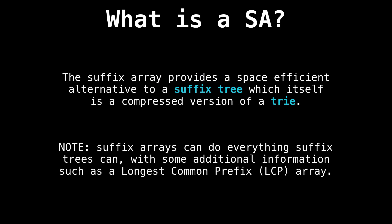In summary, a suffix array is an array of indices which store the sorted suffixes of a string. For a bit of history, the suffix array is a data structure originally designed to be a space-efficient alternative to a suffix tree, which in turn is itself meant to be a compressed version of another data structure called the trie.